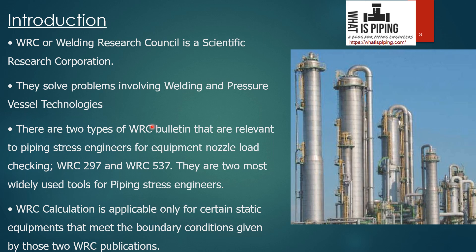There are two types of WRC bulletins relevant to pipe stress engineers for equipment nozzle load checking. Only these two types apply to this field: one is WRC 297 and the other is WRC 537. They are the two most widely used tools for pipe stress engineers, used primarily for nozzle stress checking or nozzle load checking.